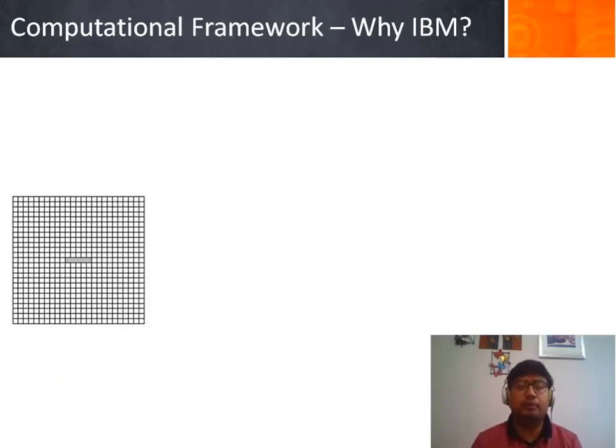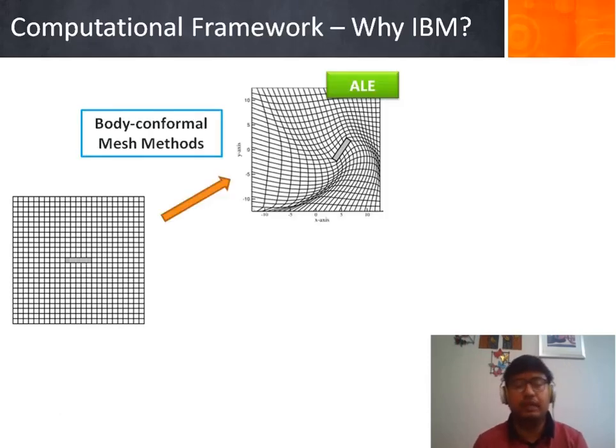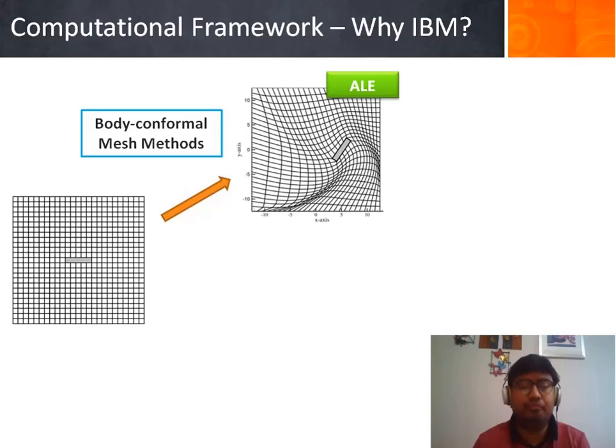On the computational front, there are two different CFD strategies. The first one is the body conformal mesh methods or body fitted mesh methods such as arbitrary Lagrange and Eulerian formulation, in which the body is inherently a part of the mesh and to capture the body motion the mesh needs to be deformed or remeshed at every time step.